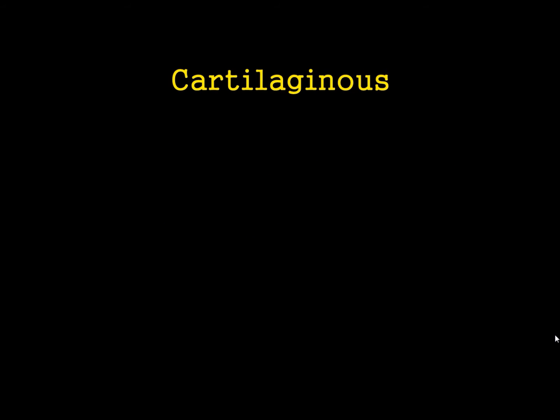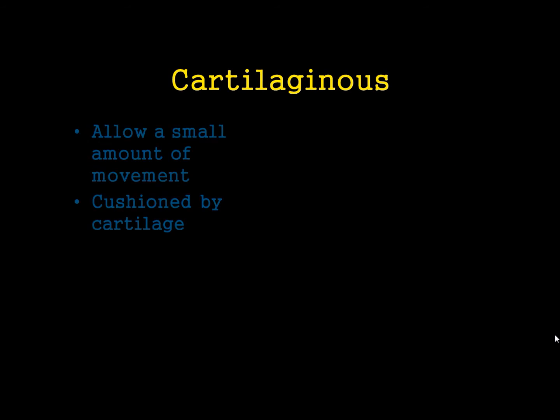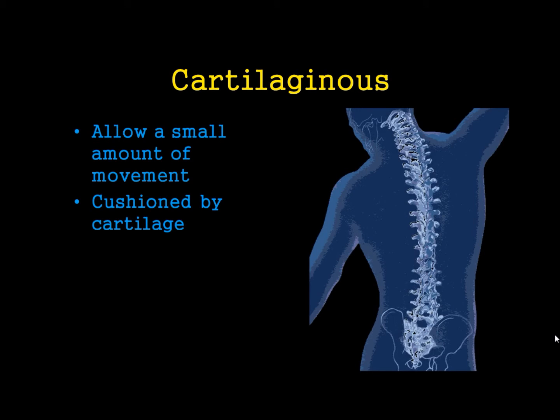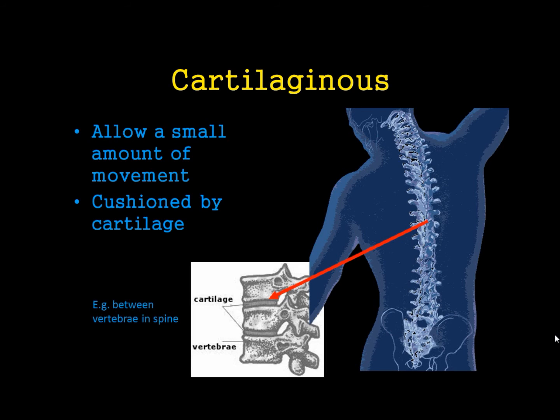We then have cartilaginous joints. These are where there is a small amount of movement, because instead of this hard glue that we have in a fixed joint, you have cartilage, which is a spongy material. A good example of this would be in between the different vertebrae in the spine, where a small amount of movement is allowed.